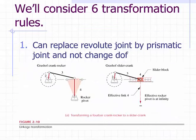We will consider six transformation rules. The first is that we can replace a revolute joint by a prismatic joint and not change the degree of freedom of our mechanism. For example,